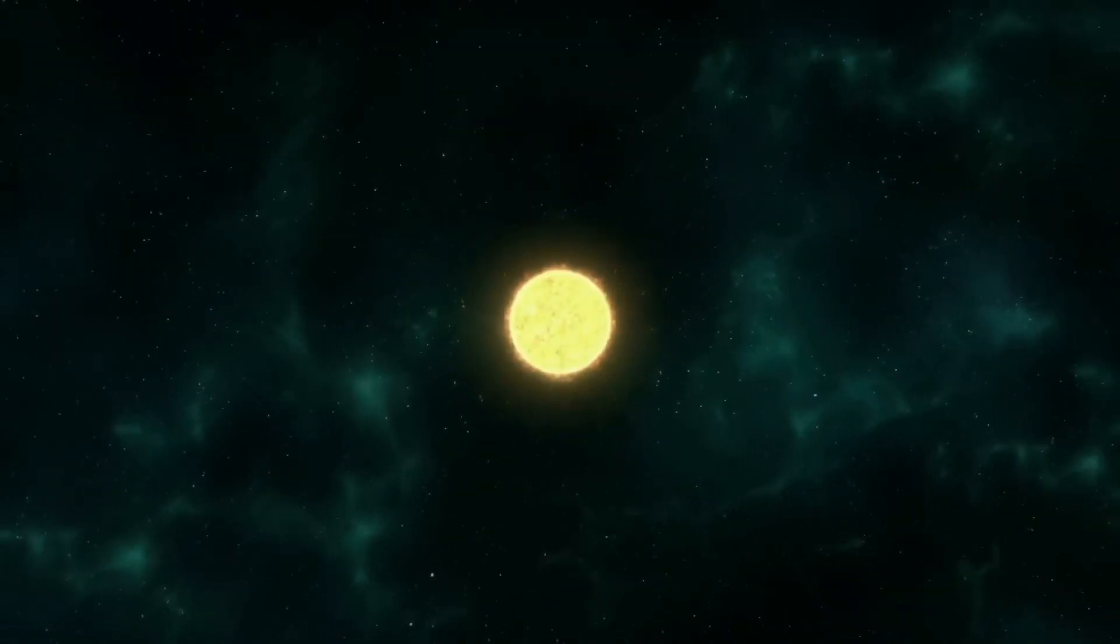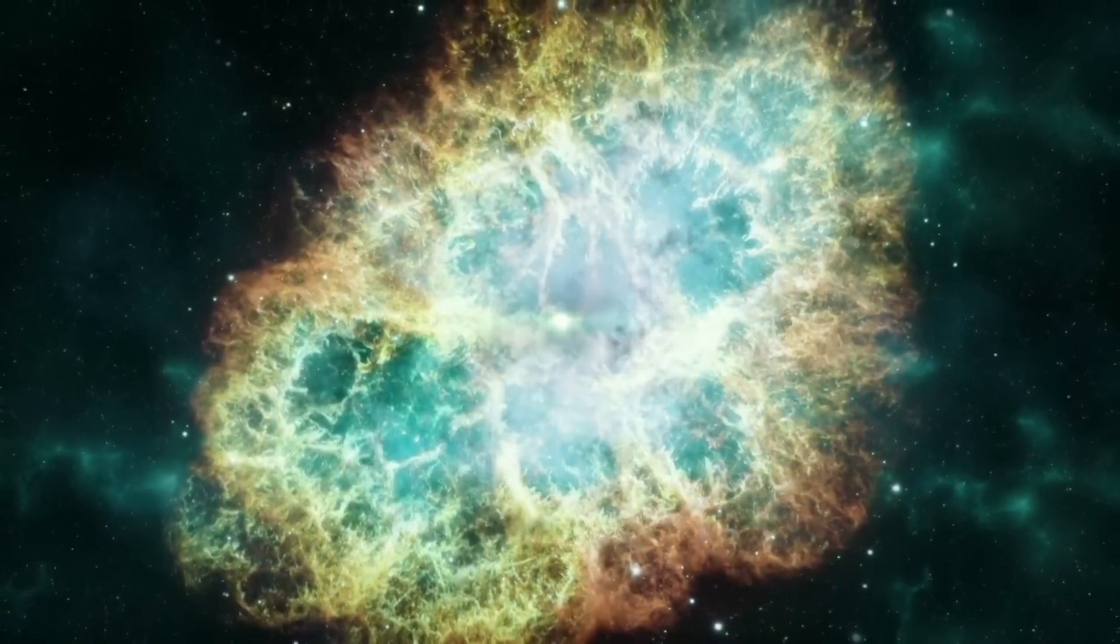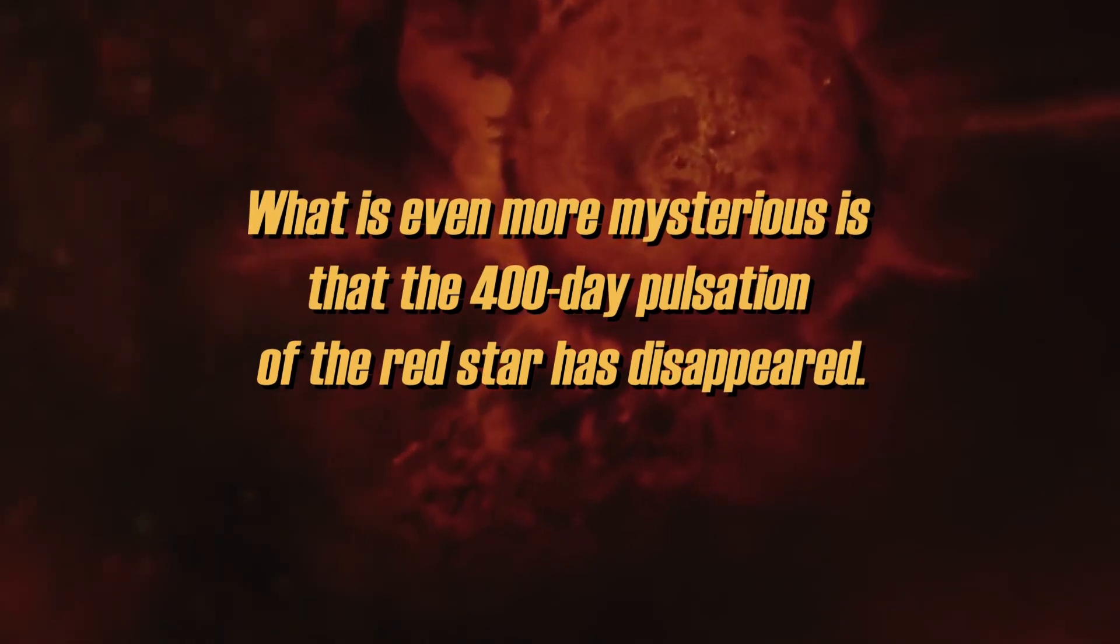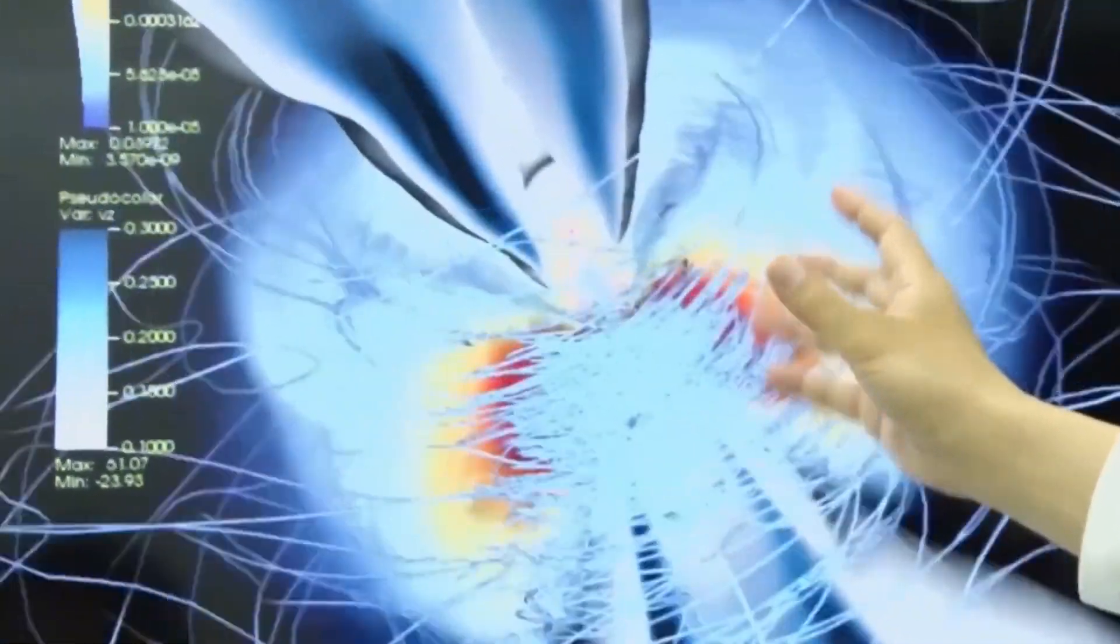The dust cloud that contributed to the abnormal darkening was also produced by the fractured piece of photosphere that shot out into space. What is even more mysterious is that the 400-day pulsation of the red star has disappeared. At the moment, experts believe it is temporary, but only time will tell.